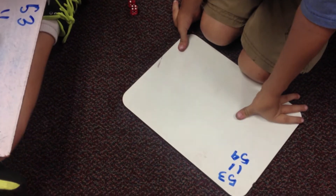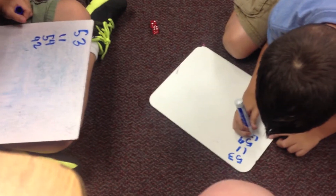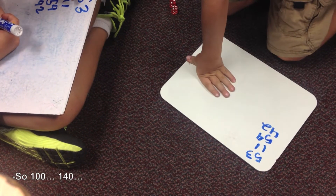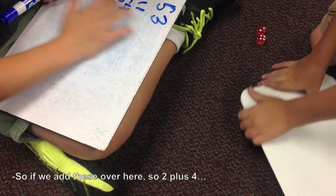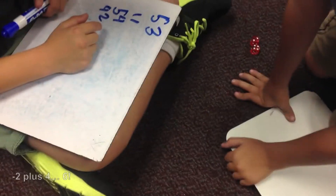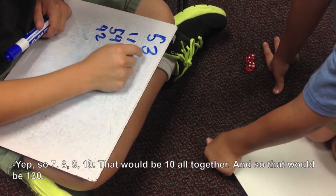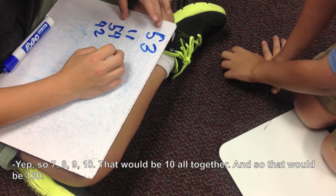Four, forty-two. Four, forty-two. So, if we add these, two plus four, six. So, seven, eight, nine, ten. That would be ten all together. So, that would be a hundred and three.